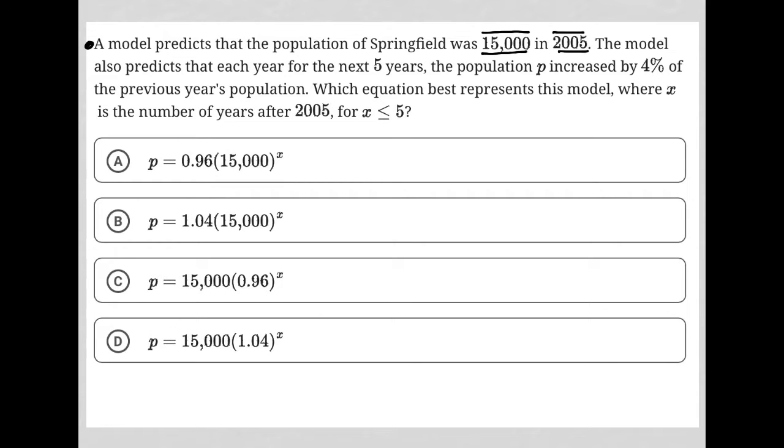The model also predicts that each year for the next five years, the population P increased by 4%. So there was an increase of 4% of the previous year's population. Which equation best represents this model where X is the number of years after 2005?